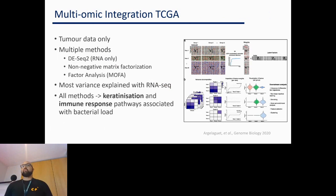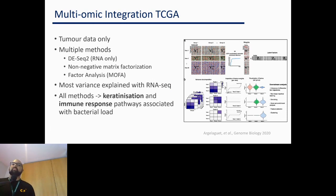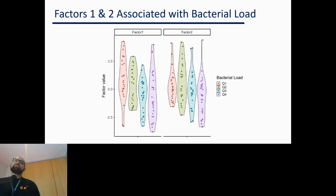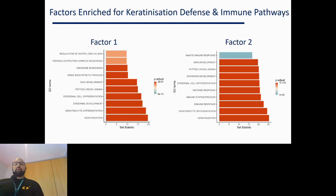From there, having a full multiomic suite of data, I decided to explore it further. With the TCGA data being somewhat limited, I tried some old-school approaches, and they all showed the same thing: bacterial load was associated with immune responses and keratinization in these tumors. The approach I want to highlight is MOFA factor analysis — think of it like principal components but for multiomics. Looking at the first two factors split by bacterial load, you can see a reasonably strong correlation, and the enriched pathways include immune response, defense response, keratinization, and epithelial differentiation.